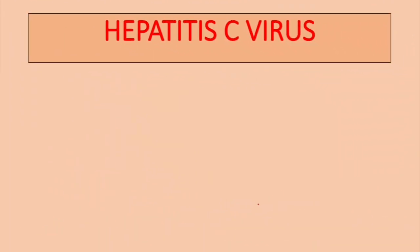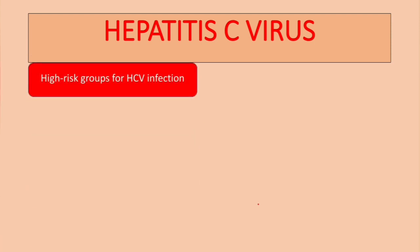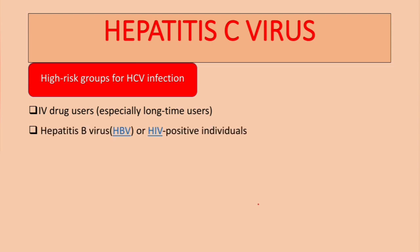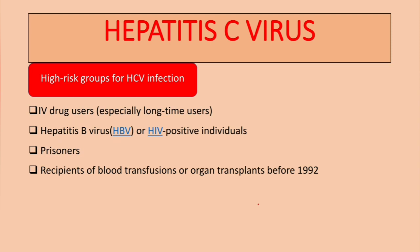Who is at risk of HCV infection? Number one, IV drug users, especially long-time users — about 90% of IV drug users are HCV positive. Also, Hepatitis B (HBV) or HIV positive individuals are at high risk, not forgetting prisoners, and recipients of blood transfusion or organ transplants before 1992.